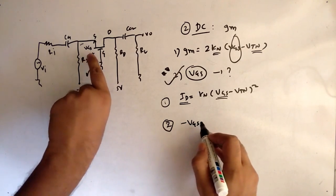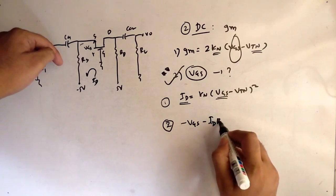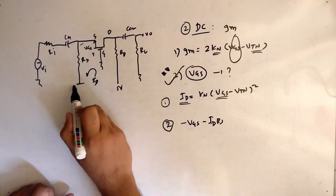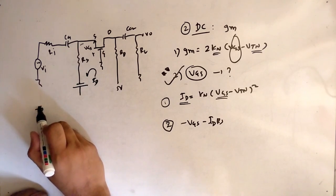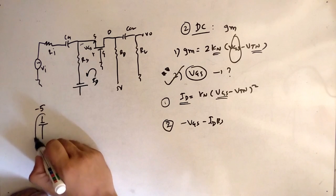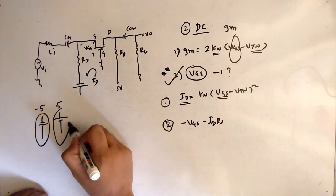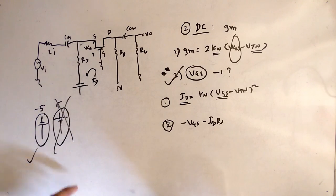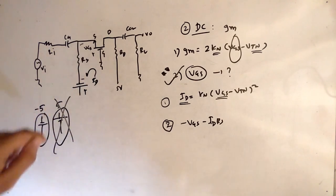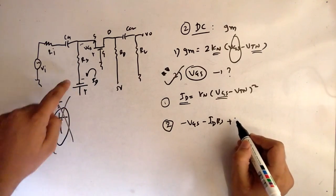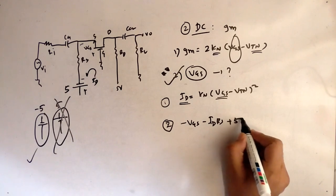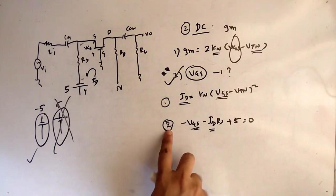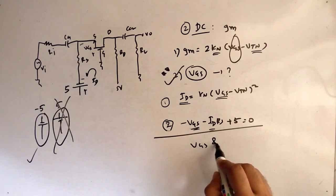Applying KVL around the loop: we have a voltage term, then minus Vgs, then the resistor drop Id×Rs. Using sign conventions — minus voltage represented one way, plus voltage the other — we arrive at: the KVL equation gives plus 5 equals zero, so we end up with two equations and two unknowns, Vgs and Id, which we can solve simultaneously.